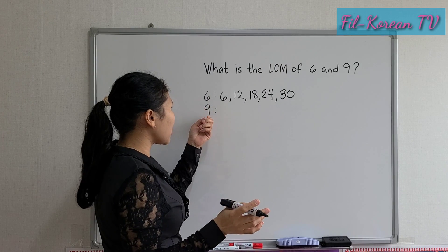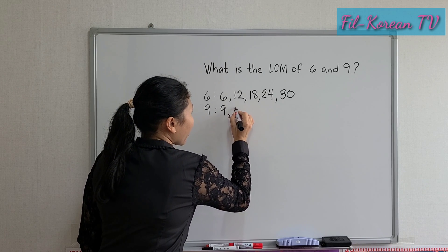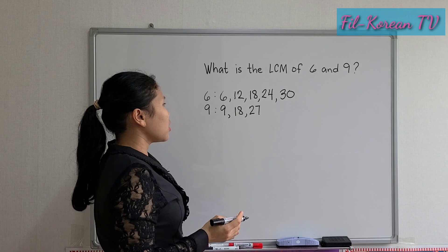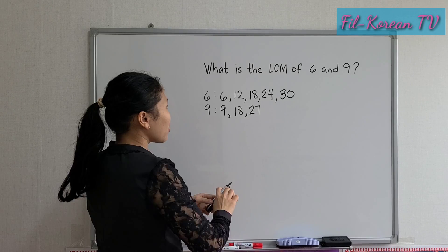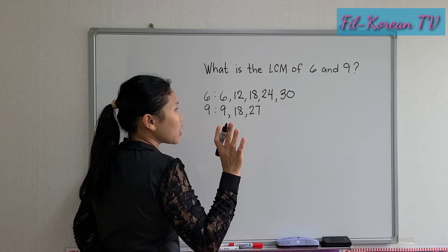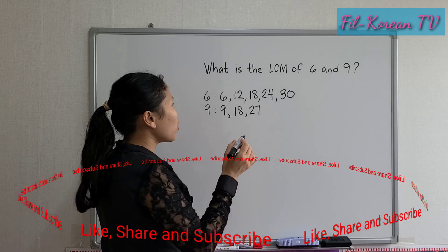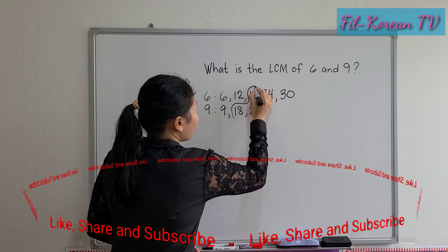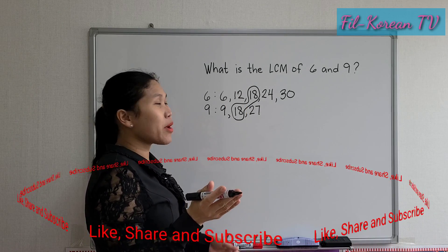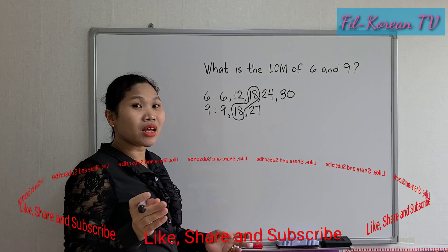And then we will also write the multiples of 9: 9, 18, 27. I will stop now because there is a common number here. In 6 and 9, there is a common number, and this is what we call the least common multiple of 6 and 9. So the LCM of 6 and 9 is 18. This is the listing method.